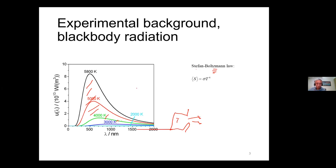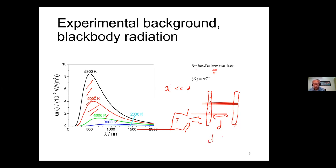This is the Stefan-Boltzmann law. Stefan did the experiment and Boltzmann gave a thermodynamic argument showing that the total amount of transfer is proportional to T to the fourth. This black body result is usually discussed when wavelengths are rather large compared to the geometry. But there is a near-field effect: if two bodies are too close, with separation D much smaller than the wavelength, the black body result breaks down and the transfer is actually much larger than predicted by the Stefan-Boltzmann law.